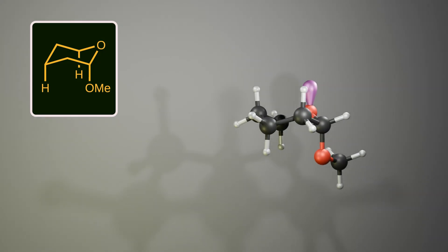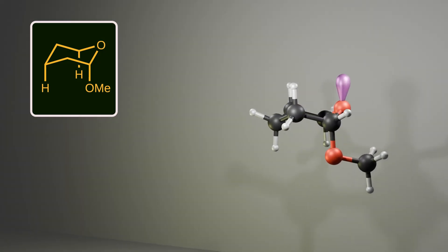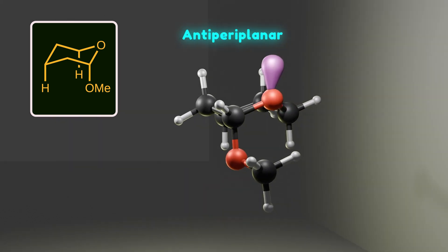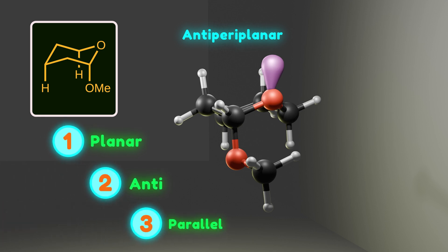Orbital interaction in the anomeric effect requires specific geometry. Two groups should be anti-periplanar to each other for maximum orbital interaction. If two groups are planar, anti, and parallel to each other, we say they are anti-periplanar. In this case, the non-bonding electrons in the p orbital of the oxygen are anti-periplanar with the carbon-oxygen bond in the axial position.